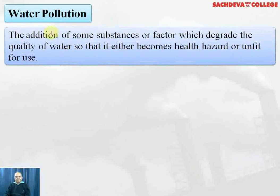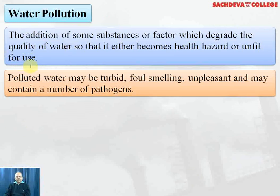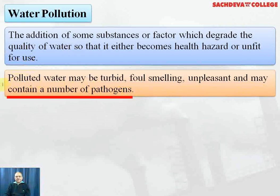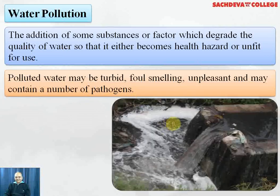Water pollution is the addition of substances or factors which degrade the quality of water so that it either becomes a health hazard or is unfit for use. Polluted water may be turbid, foul-smelling, unpleasant and may contain petroleum contaminants. In most cities in India, polluted waters are discharged into rivers, which is the main problem of contaminating almost all rivers.